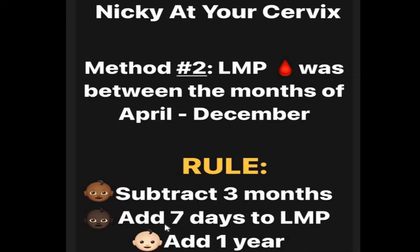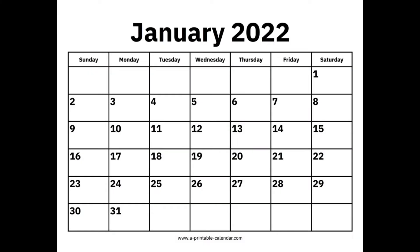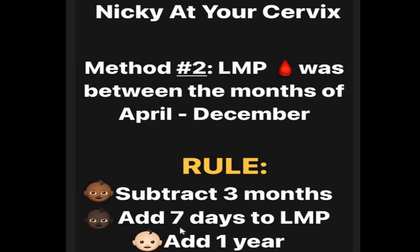The next step says to add seven days to the LMP. We're now at January 4, 2022, so we add seven to the day: seven plus four gives us 11, putting us at January 11, 2022. The last step says to add one to the year: 2022 plus one gives us 2023. So if the LMP was April 4, 2022, the due date would be January 11, 2023.